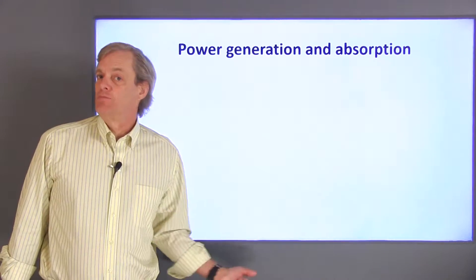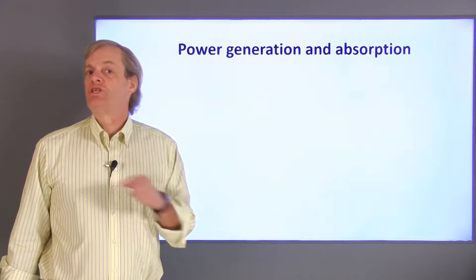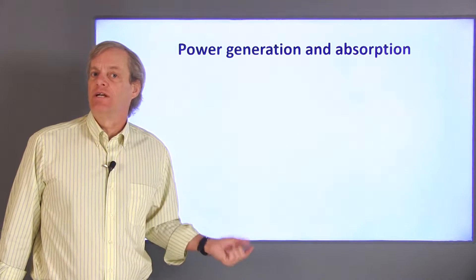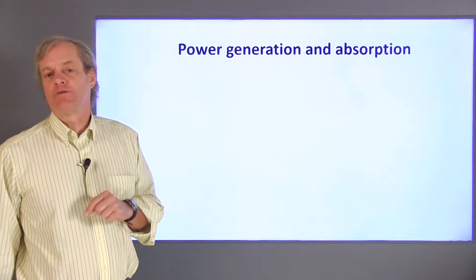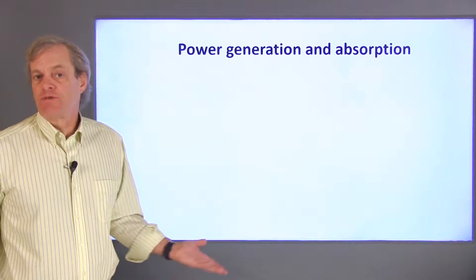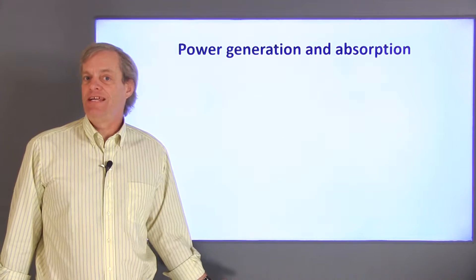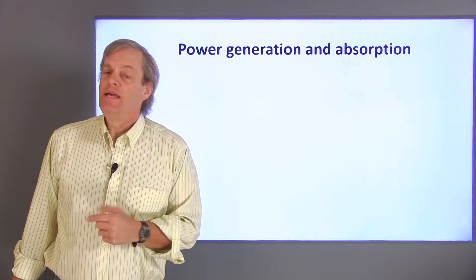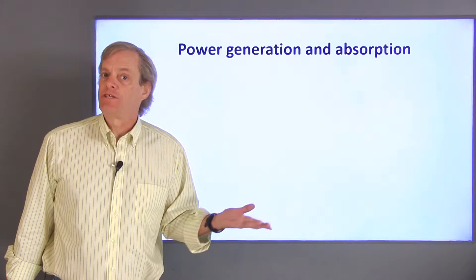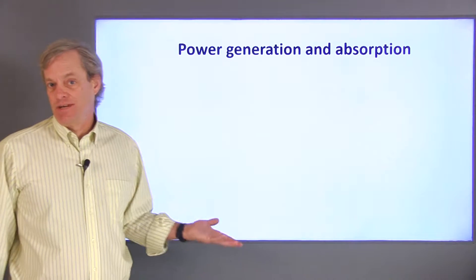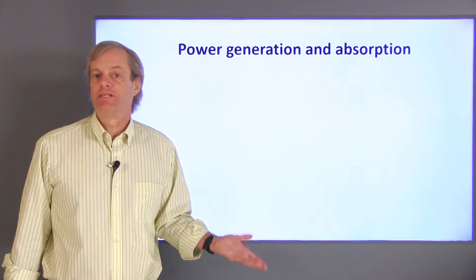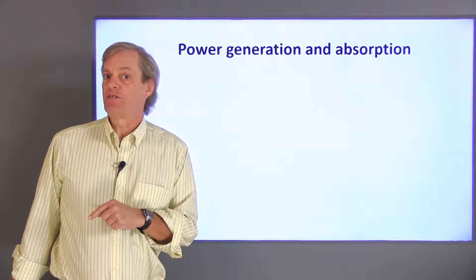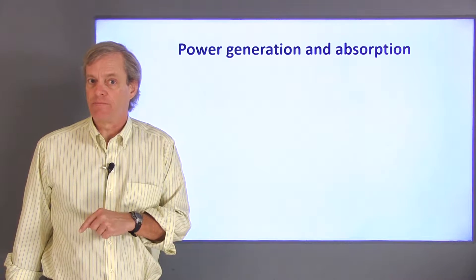Electrical circuit elements can either absorb or generate power. If an element absorbs power, it's converting electrical energy to some non-electrical form. Resistors, for example, convert electrical energy to heat — they always absorb power. If an element generates power, it's converting non-electrical energy to electricity. A battery, for example, will typically generate power by performing a chemical reaction to provide electrical energy to a circuit.